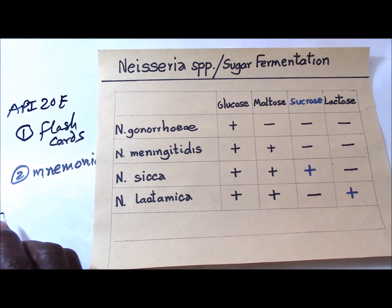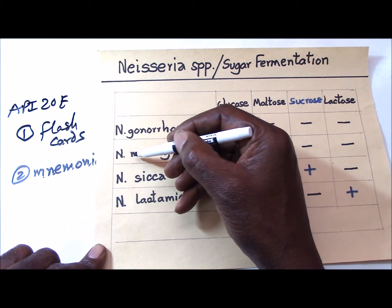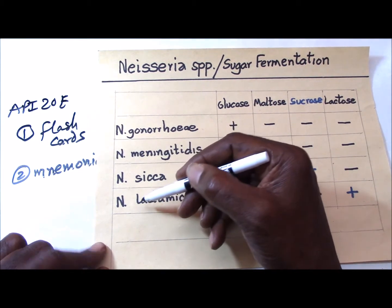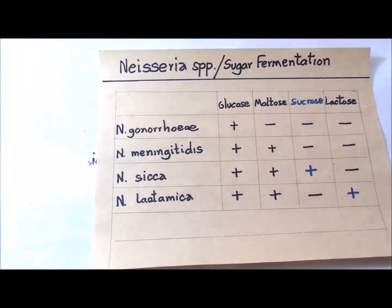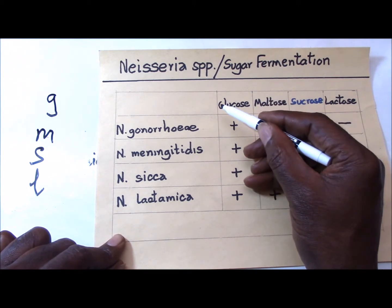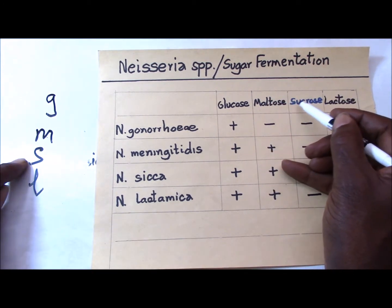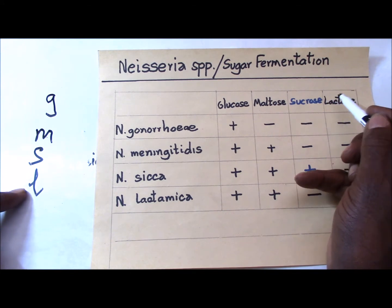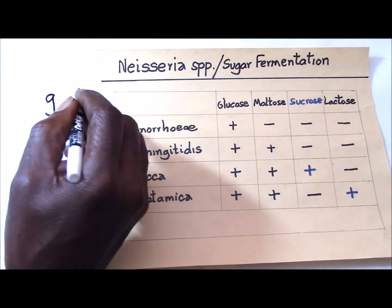Here is an example. If you look at the first letter of each species, you have G for gonorrhea, M for meningitidis, S for sicca, and L for lactamica. By some fortuitous coincidence, you also find the same letters: G for glucose, M for maltose, S for sucrose, and L for lactose. So it just fits in neatly.